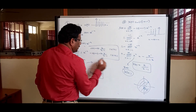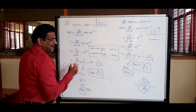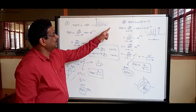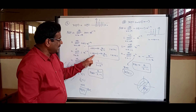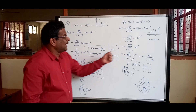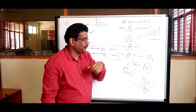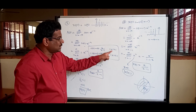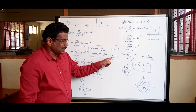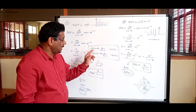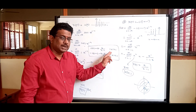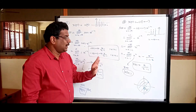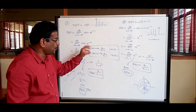Key conclusion: A right-sided (causal) sequence has its ROC outside the circle, while a left-sided (non-causal) sequence has its ROC inside the circle. Please remember: right-sided sequence → ROC is outside. Left-sided sequence → ROC is inside.